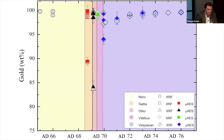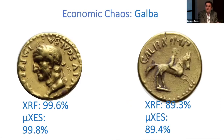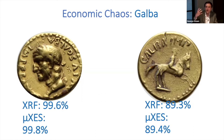The most interesting coins are the heavily debased ones. Comparing two coins of Galba: the full-purity example returns 99.6% gold by XRF and 99.8% by muon. The heavily debased one returns 89.3% by XRF and 89.4% by muon — really high-quality, congruent results. It confirms the heavy debasement is very real. This ten-percent debasement is very, very real.